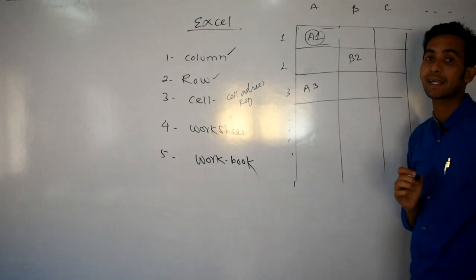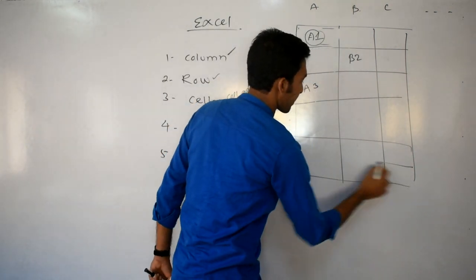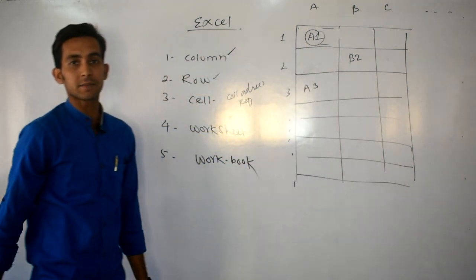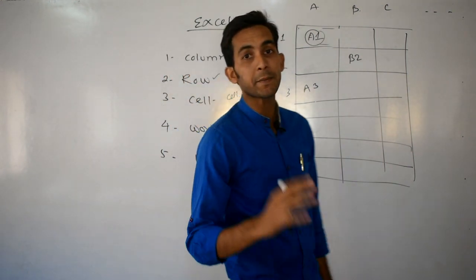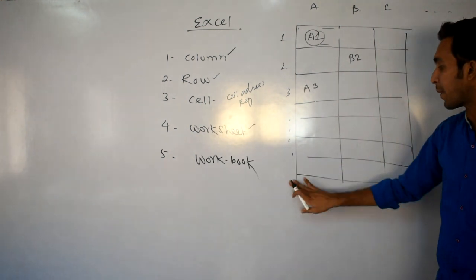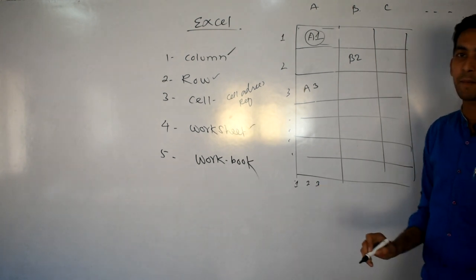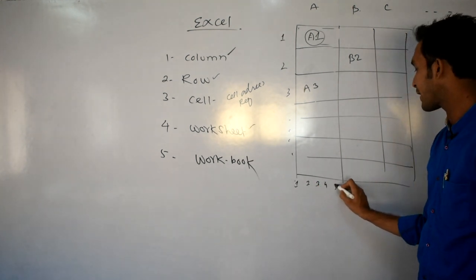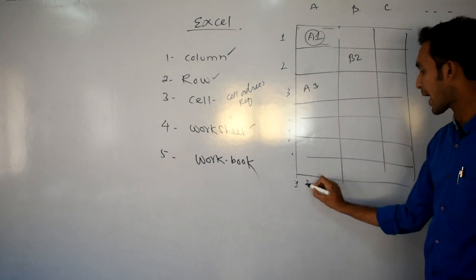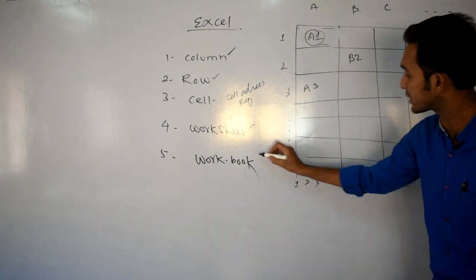Now what is a workbook? A worksheet is made of multiple columns and multiple rows — that is, multiple cells. By default there are 3 worksheets in your Excel — this can be asked in objectives. You can add more (5, 6 and so on) and delete down to 1. A collection of worksheets is known as a workbook.